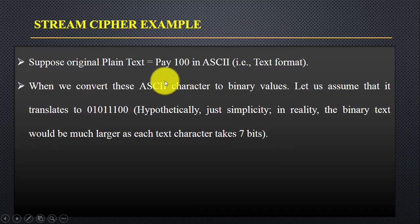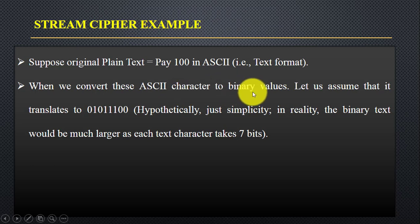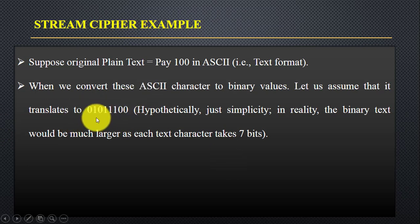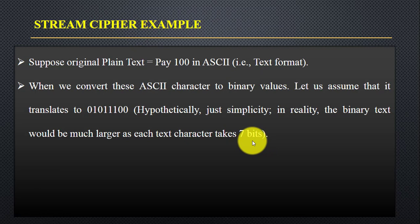For example, suppose we have a plain text — this example is for stream cipher. Suppose we have a plain text P100. This plain text is in ASCII format. When you convert each ASCII character to binary values, you convert character by character, and for each character there are 7 bits. For simplicity, we will assume those are the binary values for the plain text, since in reality it would be much larger.